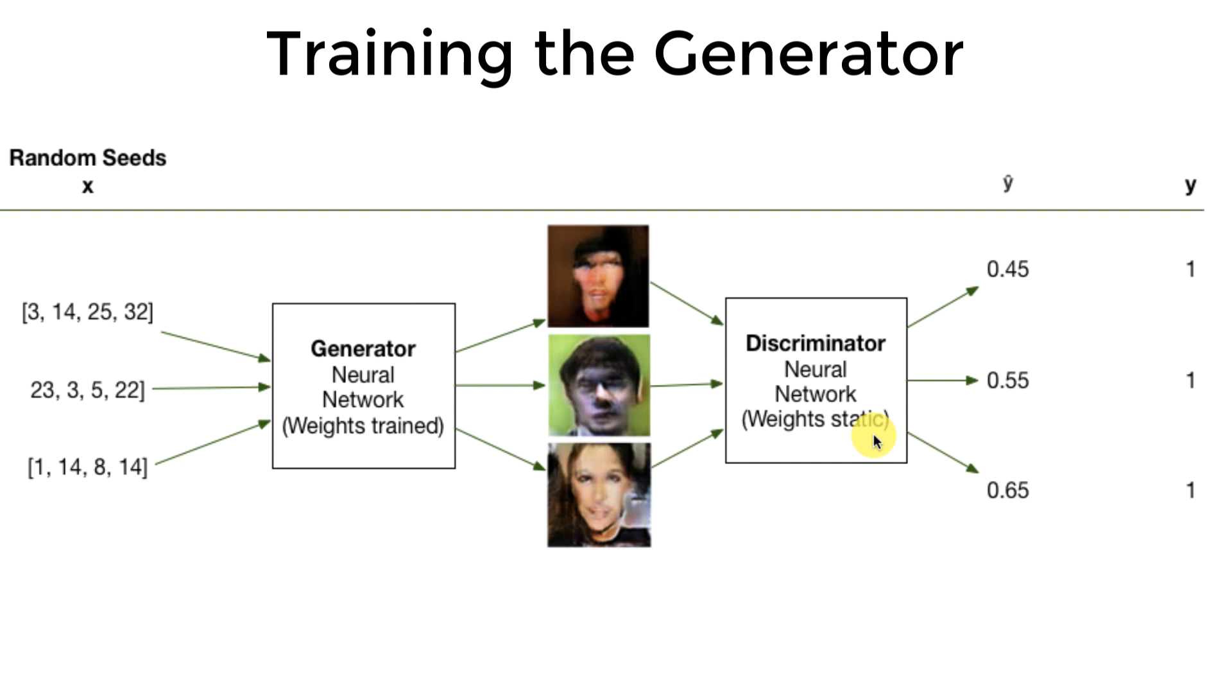That would not work well at all. Here we are training the generator. So if we were to allow the weights on the discriminator to be modified while we're training the generator, that would be cheating. The generator is basically trying to get its weights better and better and better so that we can fool the discriminator.